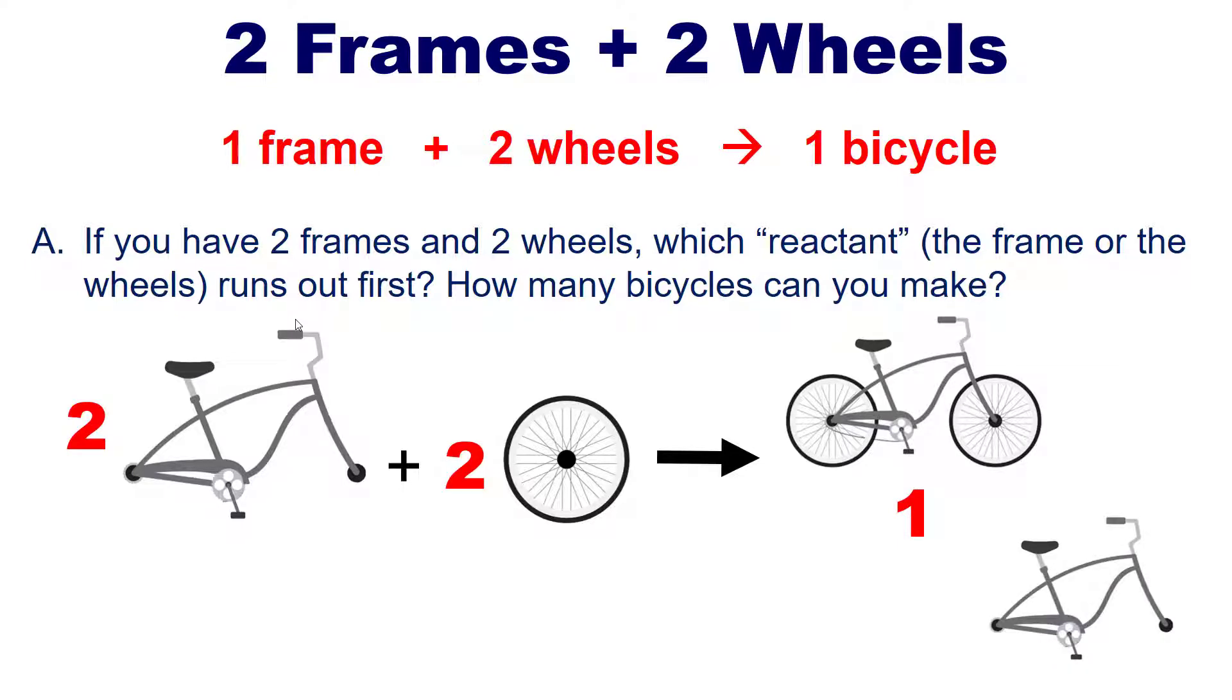Can you use that frame to make bicycles? No, because you don't have any more wheels. All you have is two wheels. So the wheels in this case run out first and the total number of bicycles that you make is just one and you have one leftover frame. Does that make sense?